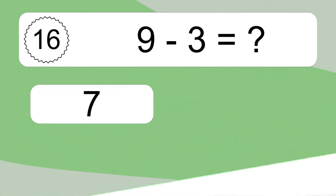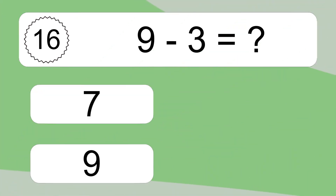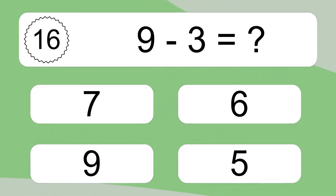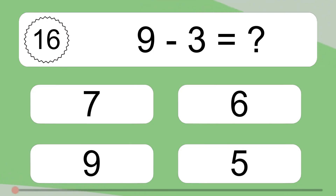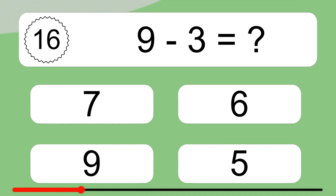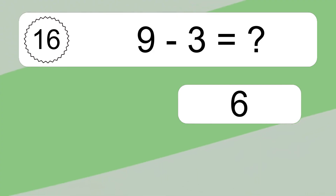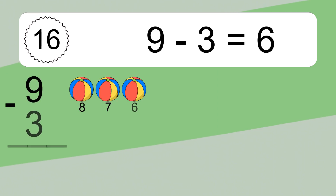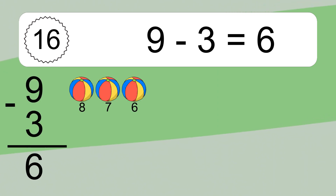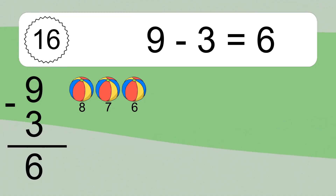9 minus 3 equals what? 9 minus 3 equals 6. Let's count it: 8, 7, 6.